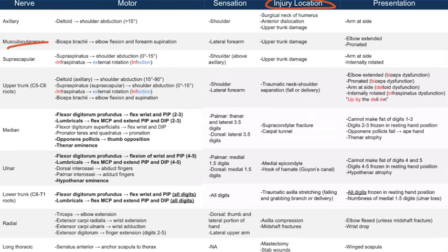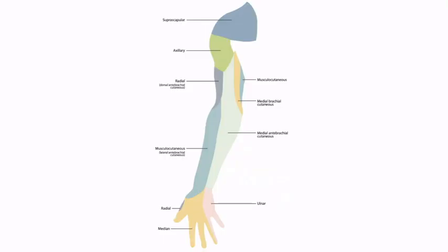The musculocutaneous nerve can be damaged with anything that damages the upper trunk, similar to the axillary nerve. If the musculocutaneous nerve does not function, the patient cannot supinate or flex their elbow — so the elbow would be extended and pronated. There will also be sensation loss around the lateral forearm. Notice the musculocutaneous nerve provides sensation to the lateral forearm specifically through the lateral antebrachial cutaneous branch — don't worry about that branch name, just associate it with the musculocutaneous nerve. Just know that the musculocutaneous nerve innervates the lateral forearm.